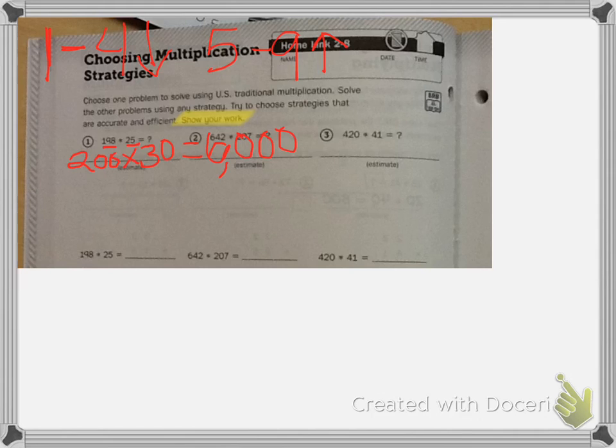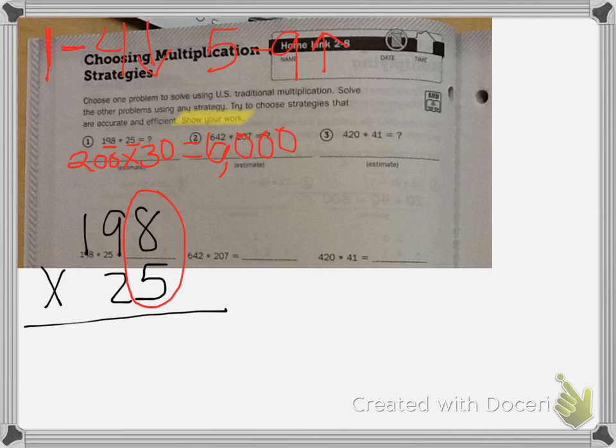So this problem, I'm going to do the U.S. traditional model. I'm going to rewrite it so I can work big: 198 times 25. 5 times 8 is 40. Here's my 0, and I carry my 4. 5 times 9 is 45, plus 4 is 49. And here's my 4. 5 times 1 is 5, plus 4 is 9. 990.